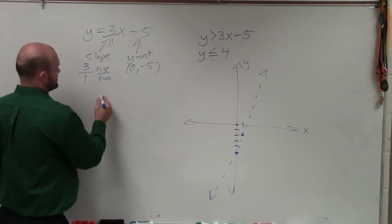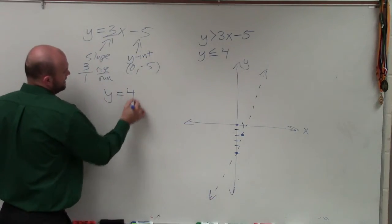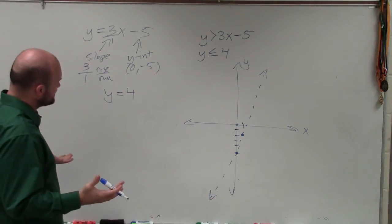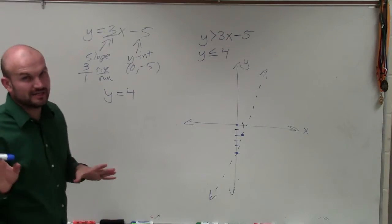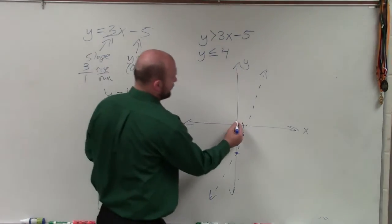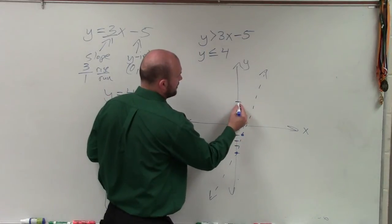Now let's get into y is less than or equal to 4, which I can think of y equals 4. Now, we could use the table values, and a lot of times that's what I've done. But when looking at this, I'll get to the shading in just a second. But when looking at this, y equals 4, we know that y equals 4 is this coordinate of 1, 2, 3, 4. It's right here.